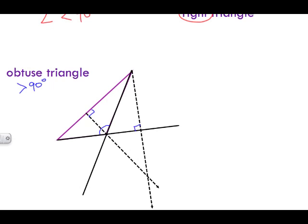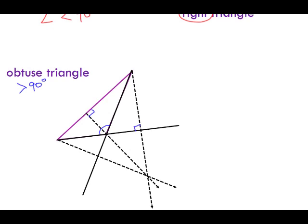The same goes for the third vertex — from this vertex, we cannot form a 90 degree angle on this side of the triangle; it lies beyond. So the 90 degree angle forms outside. In an obtuse triangle, only the initial altitude drawn from the obtuse vertex actually goes within the triangle. All the other altitudes are drawn outside of the triangle, and this is where the orthocenter lies in an obtuse triangle — outside of the triangle.